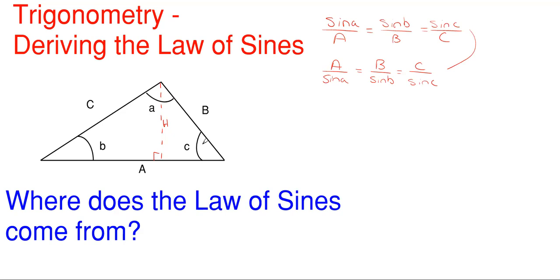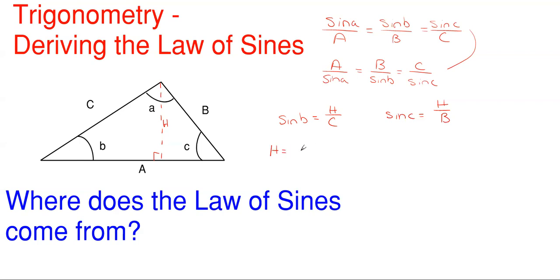Now let's write the equations for the sine of angle B and the sine of angle C using our two right triangles. The sine of angle B is going to be my opposite over my hypotenuse, so it's going to be H over side C. Then for the right triangle on the right side, the sine of angle C is equal to its opposite over hypotenuse, which is H over side B. Now let's rearrange the equation sine B equals H over C and solve for H.